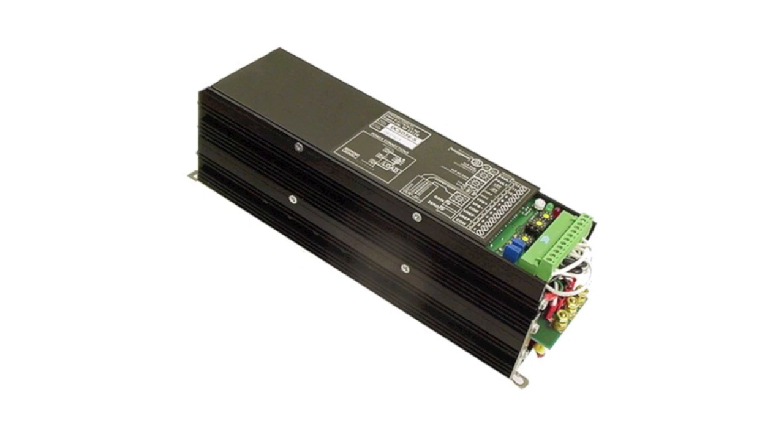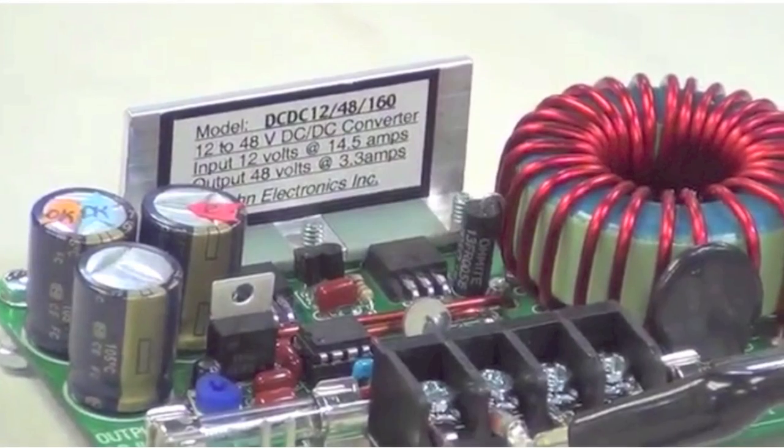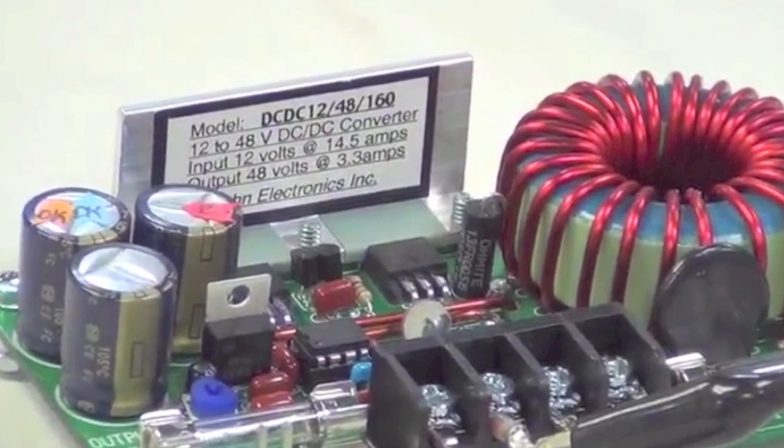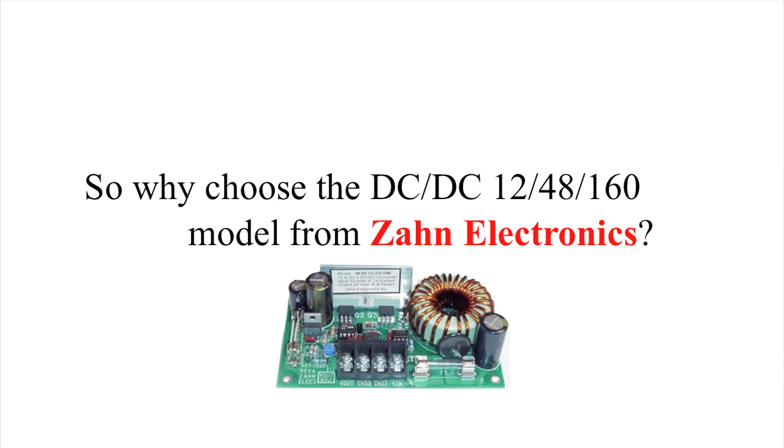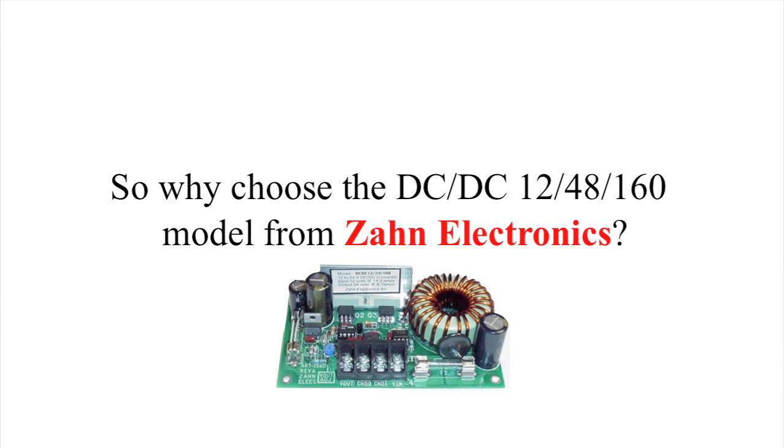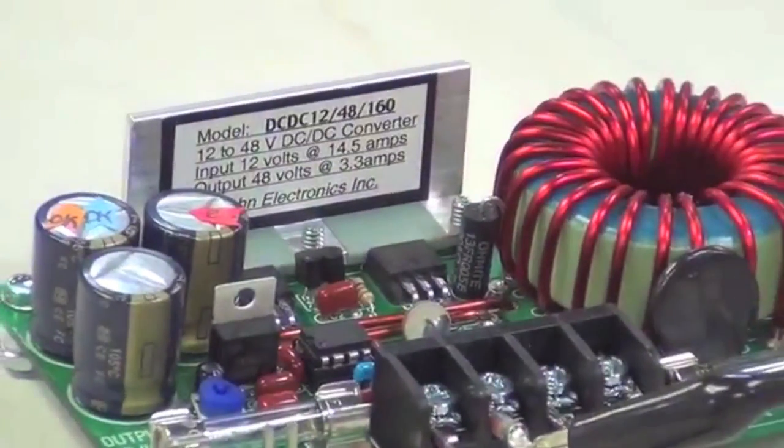If your DC equipment needs a higher voltage than the 12 volts you're running on, you need a DC to DC step-up converter. There are a number of them on the market, so why choose the DC/DC 12/48/160 model from Zahn Electronics? First, a short demonstration of how well it works. Here you can see the unit.